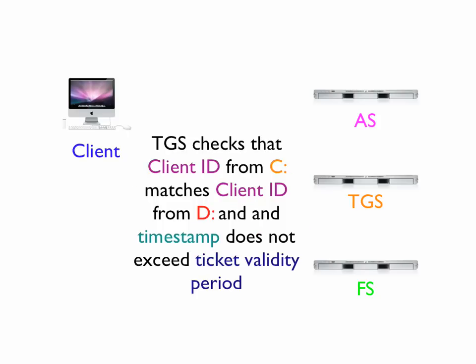The TGS checks whether the client ID from message C matches the client ID from message D, and whether the ticket validity period has elapsed since it received the timestamp. For example, if the ticket validity period is five minutes, it checks whether the current time is still within timestamp plus five minutes. If the client IDs match and the ticket has not expired, the process continues.